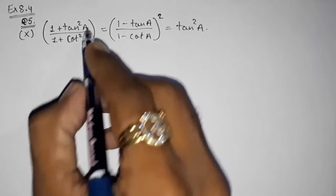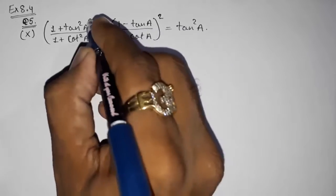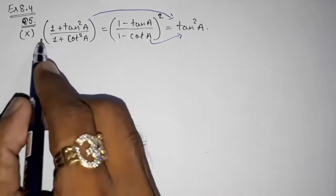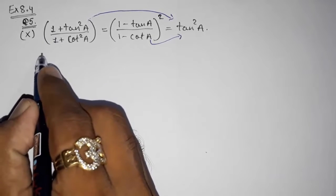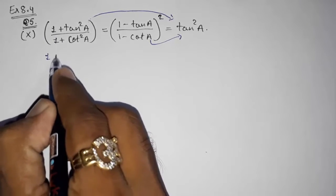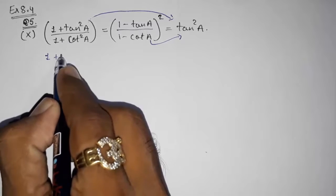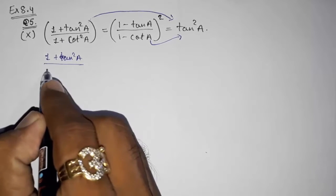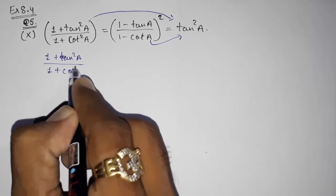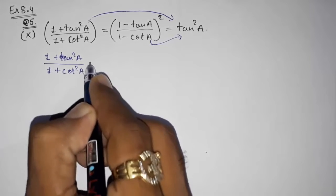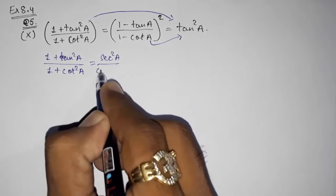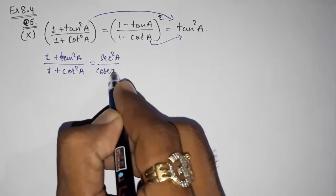So directly I am going to prove the first equals the second, and the second equals the third. Let us start with the first part: (1 + tan²a) / (1 + cot²a) equals sec²a / cosec²a.